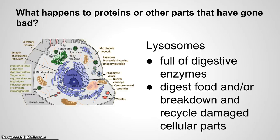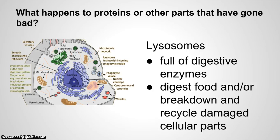What happens to proteins or other parts that have gone bad? We need something to handle when an organelle or something has started to deteriorate, because we don't want to keep using something whose function is going bad. So we have lysosomes that are full of digestive enzymes. These digestive enzymes are going to digest food, or they're going to break down recycled or damaged parts of the cell.